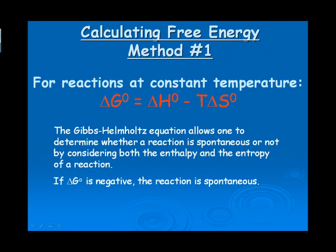The first method is using the Gibbs-Helmholtz equation: delta G equals delta H minus T delta S. Notice that in this equation, both the entropy and the enthalpy are considered. What we're looking for here is an overall negative sign, and if we get an overall negative sign, then the reaction is spontaneous. So this is the first way that we can calculate Gibbs free energy.